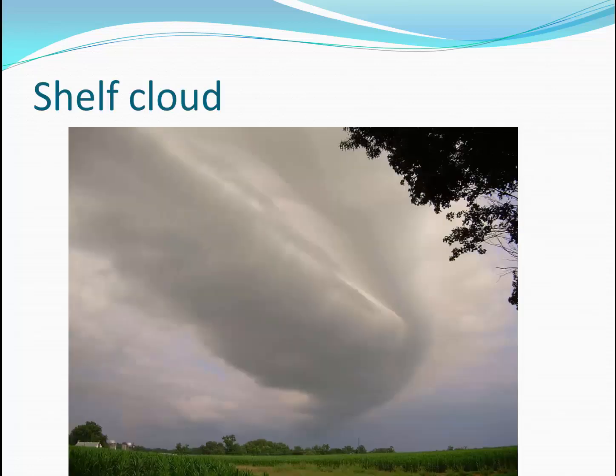If you're on the ground when a squall line comes, a lot of times it may be preceded by a shelf cloud. The shelf cloud is condensation that happens right on the cold front boundary. On the ground, you'll experience strong straight line winds.